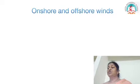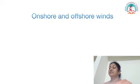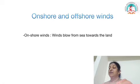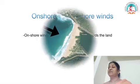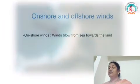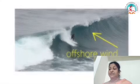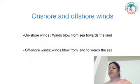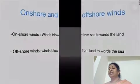Let's see what onshore winds and offshore winds are. Onshore winds blow from the sea towards the land, while offshore winds blow from the land towards the sea. Onshore winds cause rainfall and make the place cool, whereas offshore winds bring dry weather.